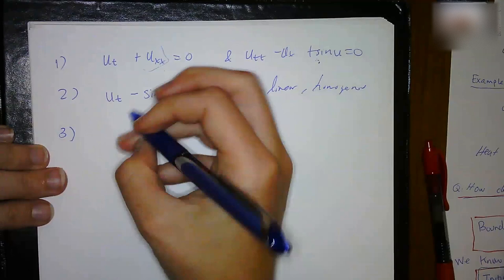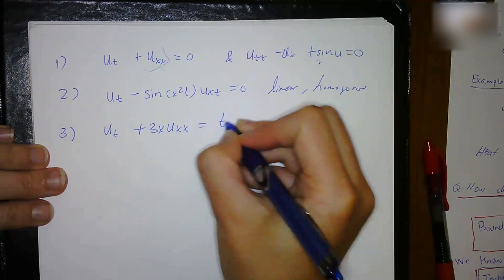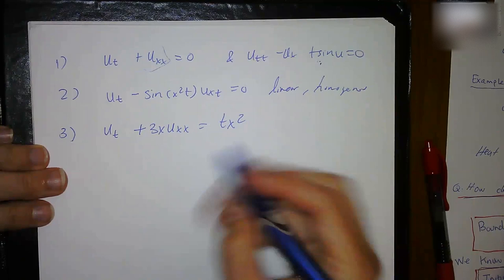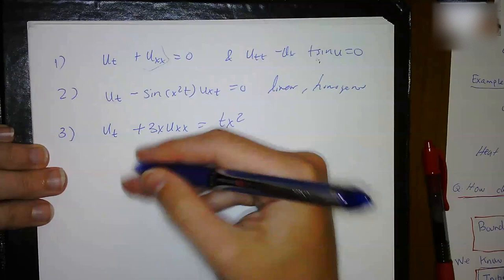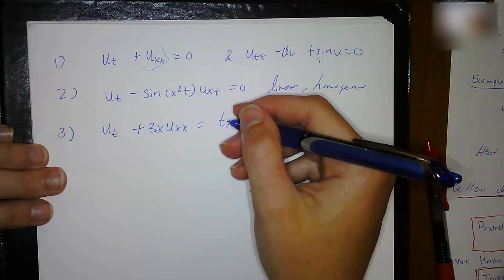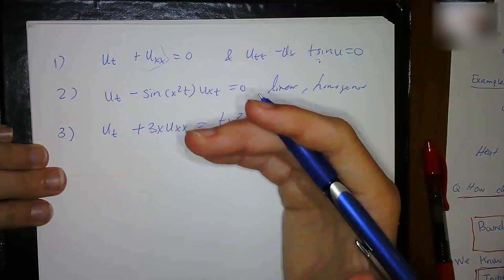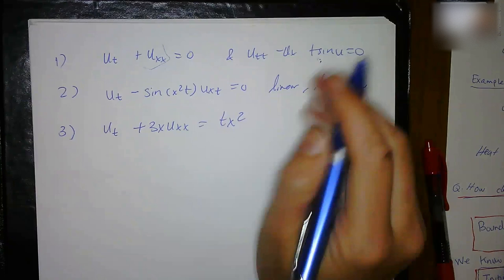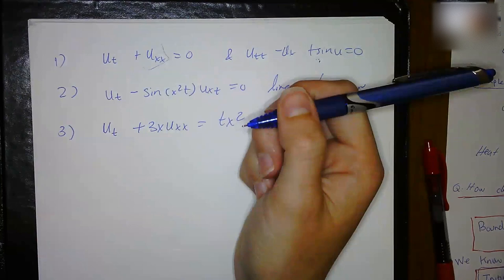A third example: u_t plus 3x·u_xx equals t·x². We know from the start it's definitely not homogeneous. But looking at the powers of the terms, each term contains u_t or some derivative, so that's linear. Therefore this equation is linear, non-homogeneous.